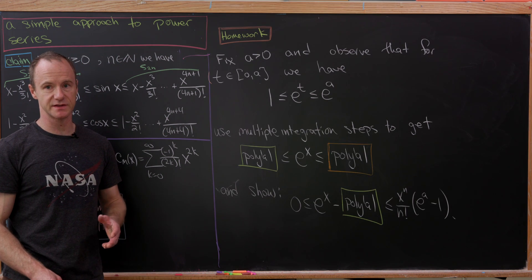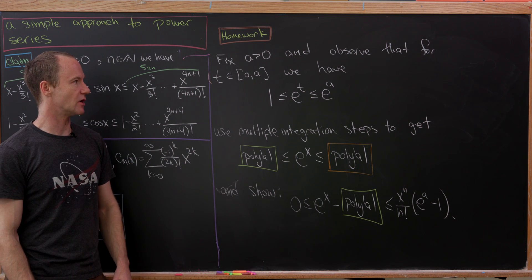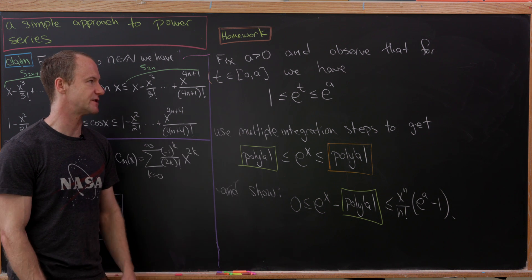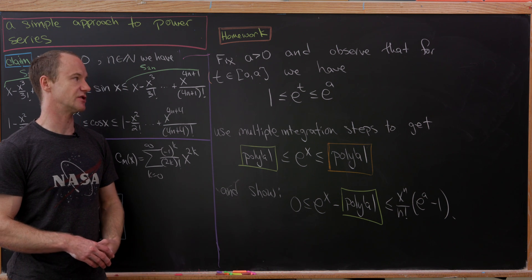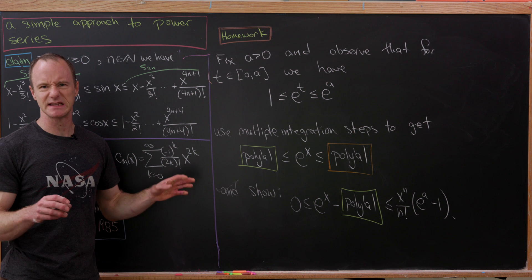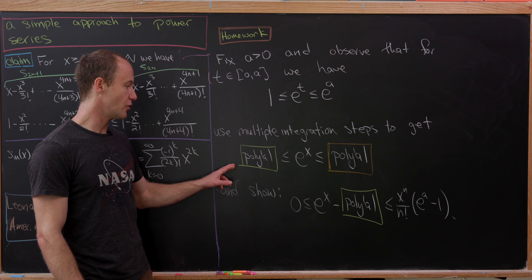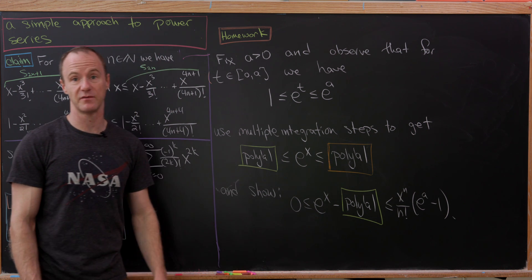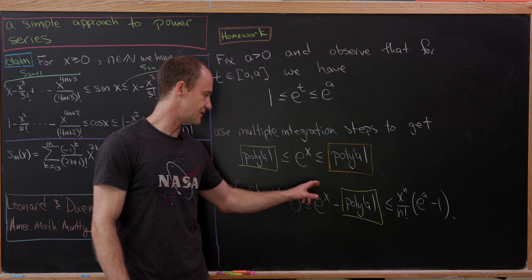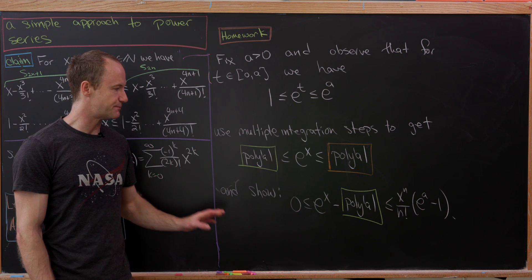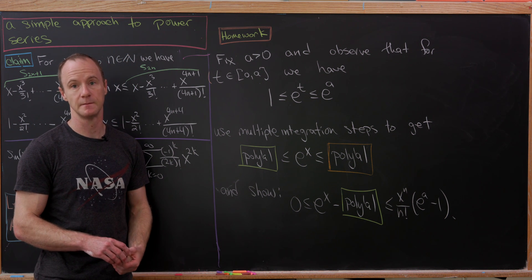I'll leave you with an exercise using similar methods. Fix a number a greater than zero. Observe that for t on the closed interval from zero to a, we have: one is less than or equal to e to the t, which is less than or equal to e to the a. Since a is fixed, e to the a is a constant. Use multiple integration steps to get a polynomial below e to the x and e to the x bounded above by another polynomial. Then show that e to the x minus the lower polynomial is bounded by x to the n over n factorial times (e to the a minus one).